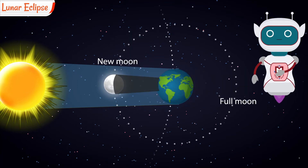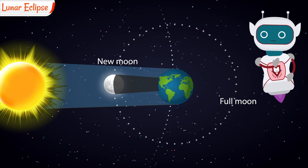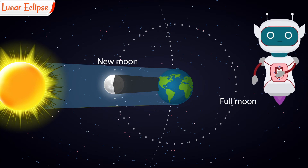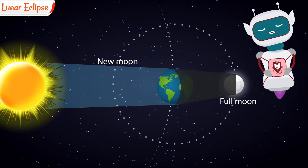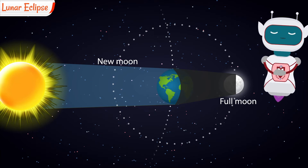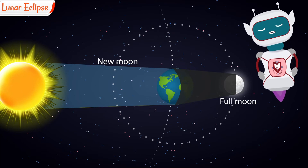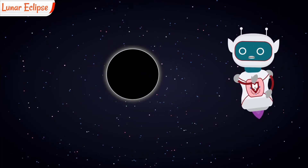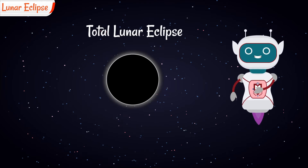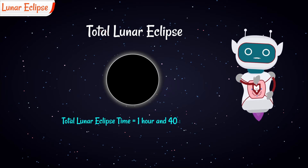The Lunar Eclipse occurs during full moon time. When the Earth fully blocks the light from falling on the Moon, we will see a Total Lunar Eclipse. The Total Lunar Eclipse can last around 1 hour and 40 minutes.